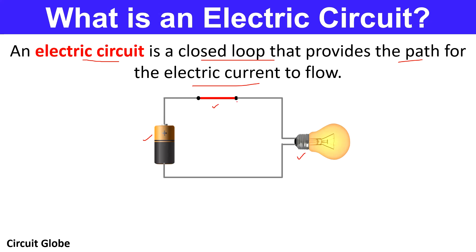If this switch is open, then the circuit will not be completed and no flow of current will take place, so this bulb will not glow. However, if this switch is closed, like the one shown over here, then the circuit will get completed, thereby allowing the flow of current to take place, and hence this bulb will glow.